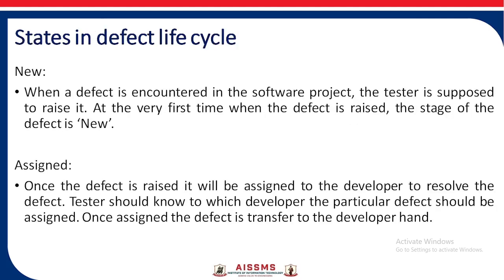Now the states in the defect life cycle. New: when a defect is encountered in the software project, the tester is supposed to raise it. The very first time a defect is raised, the new stage comes into picture. Assigned: once the defect is raised, it will be assigned to a developer to resolve. The tester should know to which developer the particular defect should be assigned. Once assigned, the defect is transferred to the developer's hand.